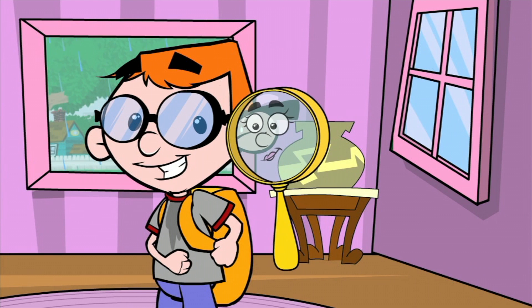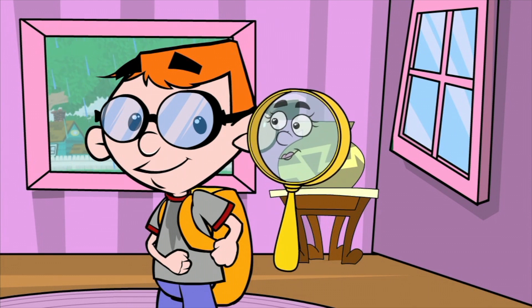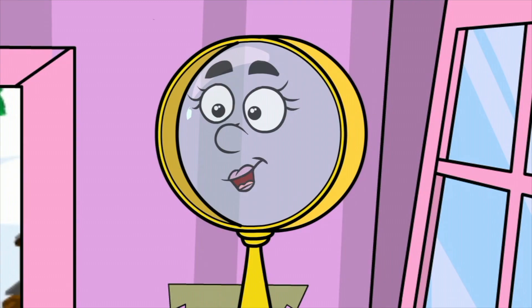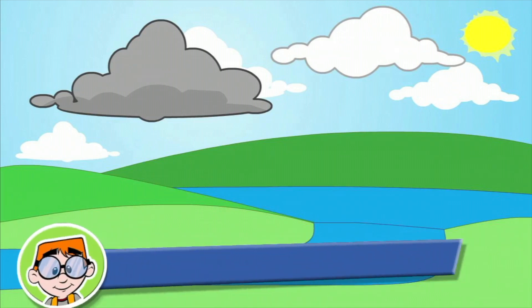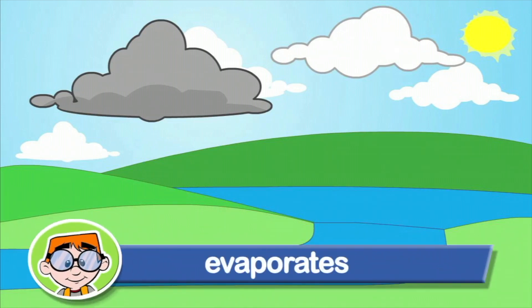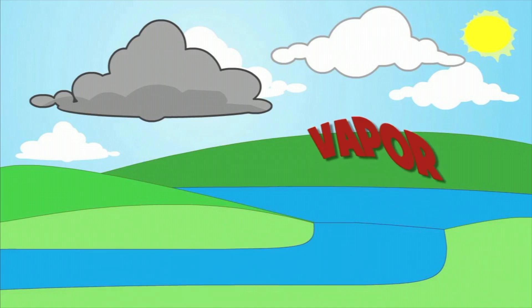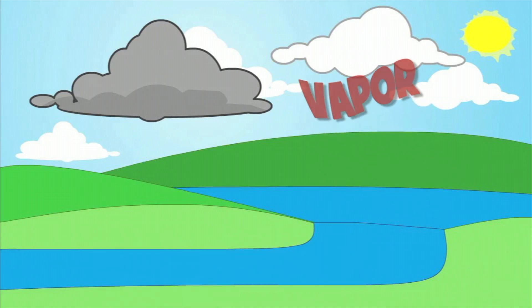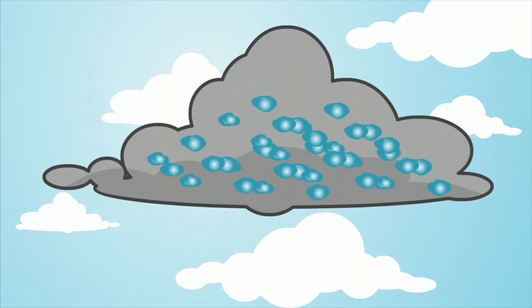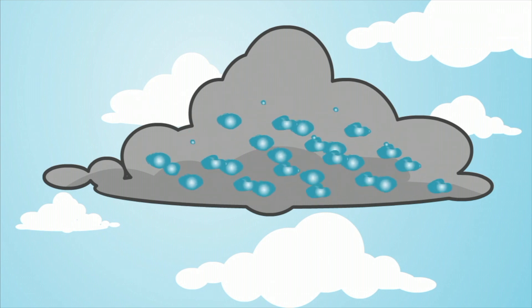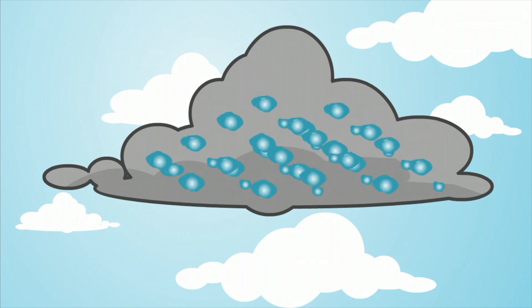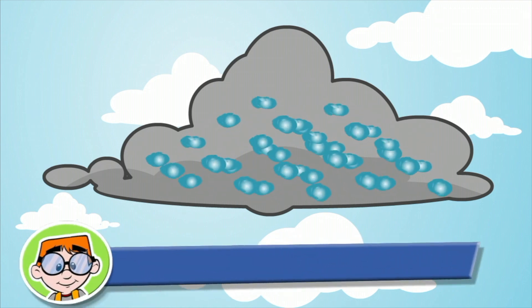The water cycle? What's that? Here's how the water cycle works. The sun heats a body of water, like the ocean. The water evaporates — or turns into steam or vapor — and then travels up into the sky. Then the water vapor becomes cooler and comes together, collecting in clouds. It's called condensation.